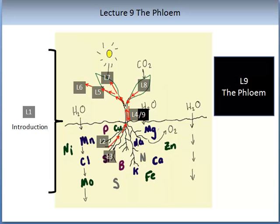We are learning about different aspects of the plant by taking a virtual journey through the plant, starting at Lecture 1 with an overview. We then entered the root system, learning about how water and plant nutrition are absorbed through the roots, how they are translocated in the xylem and end up in the leaf. We have learnt about transpiration, stomata, and photosynthesis — both the light and non-light carbon-fixing reactions. We are now at the phloem.